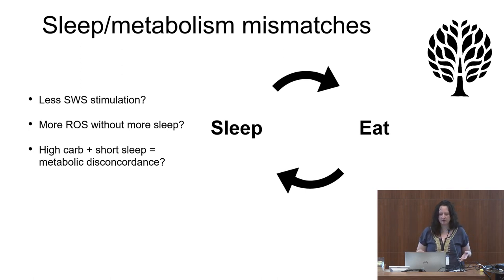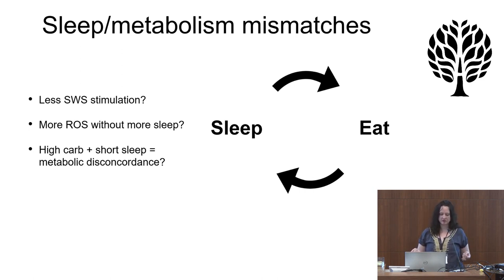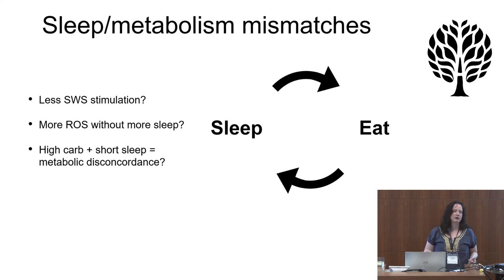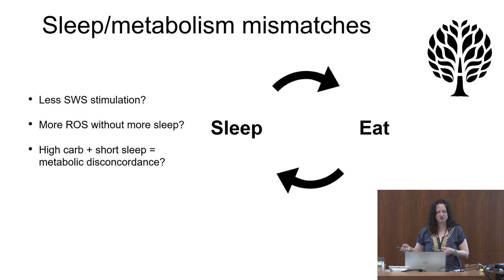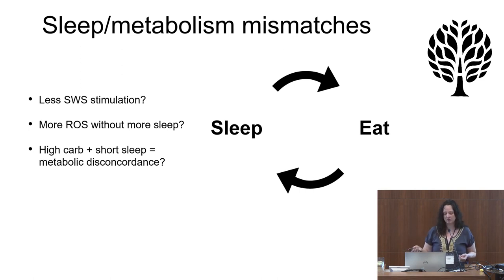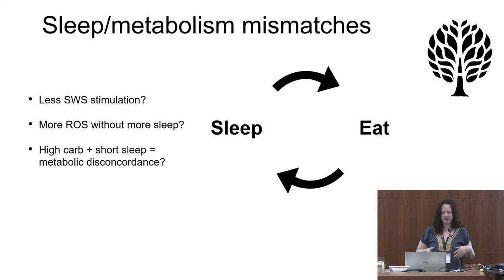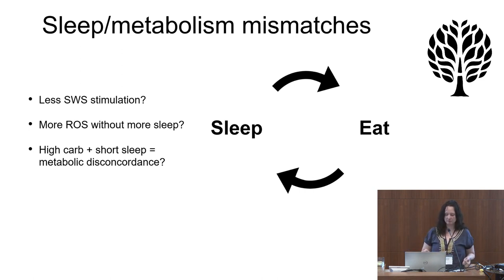Given all these things, I think these are the three potential mismatches for sleep and metabolism. One is that we could be getting less slow-wave sleep stimulation — from a change in diet, a change in activity, or even cognitive changes — and that could affect our sleep. Maybe we're having more exposure to oxidation without getting the extra sleep that would normally take care of that — if we're used to a certain amount of sleep that was dependent on lower ROS levels. And finally, maybe there's just a mismatch between having short sleep and having a higher glucose diet at the same time, instead of having short sleep go along with lipid metabolism.